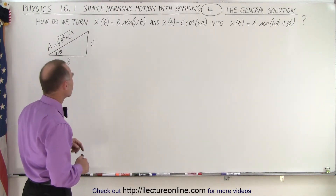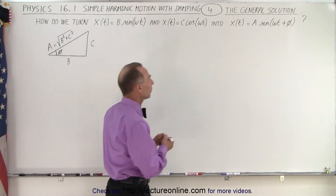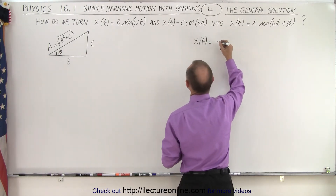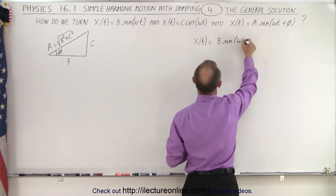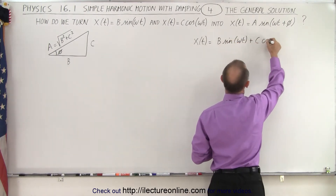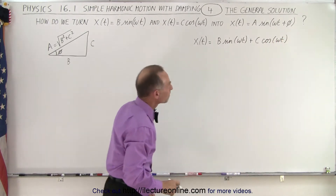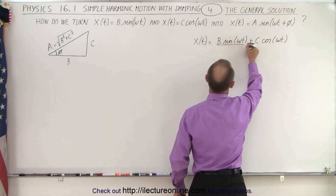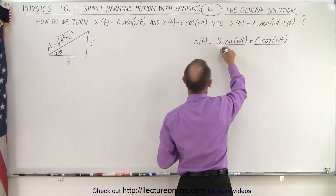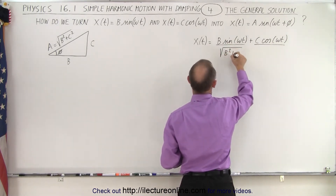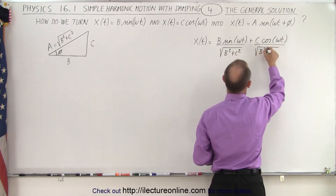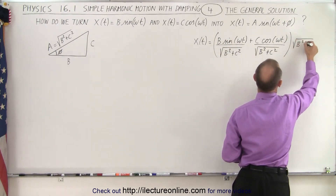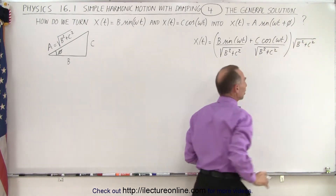We're going to employ a triangle relationship. We're going to say that x of t is the solution formed by combining the two: b times the sine of omega t plus c times the cosine of omega t. The way it's done — it's a mathematical trick — is to divide both terms by the hypotenuse of that triangle. So we divide by the square root of b squared plus c squared. Of course, when we do that we also must multiply the whole thing by the square root of b squared plus c squared in order to not change anything about the function.